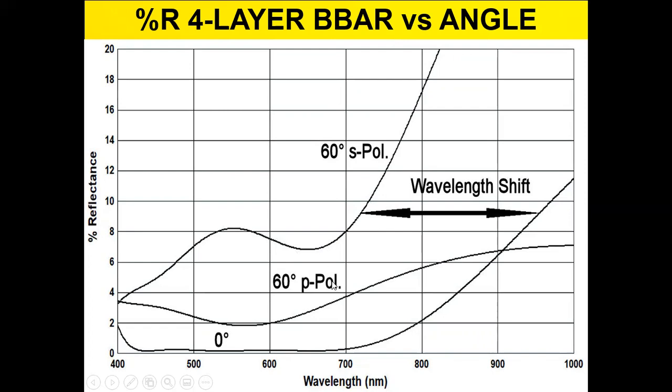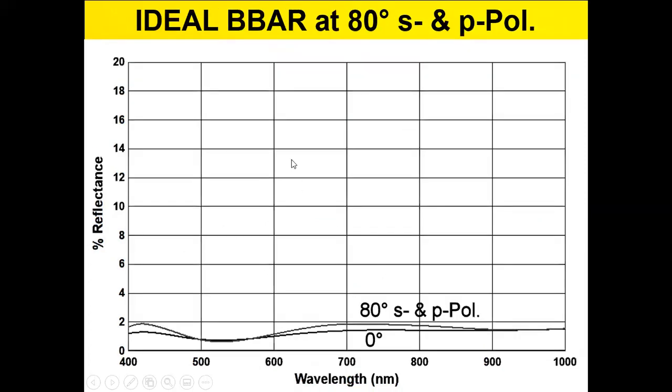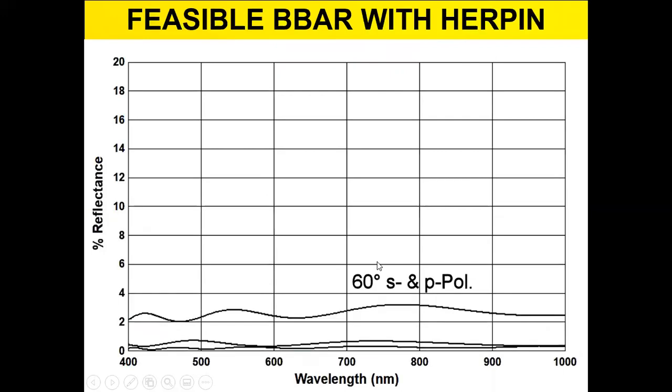Here's the slide I showed you before, where this normal four layer AR does not do very well at these high angles of 60 degrees. But if I could do the ideal BBAR, it would actually go up to 80 degrees and still be below 2%, whereas the zero degree is at zero.